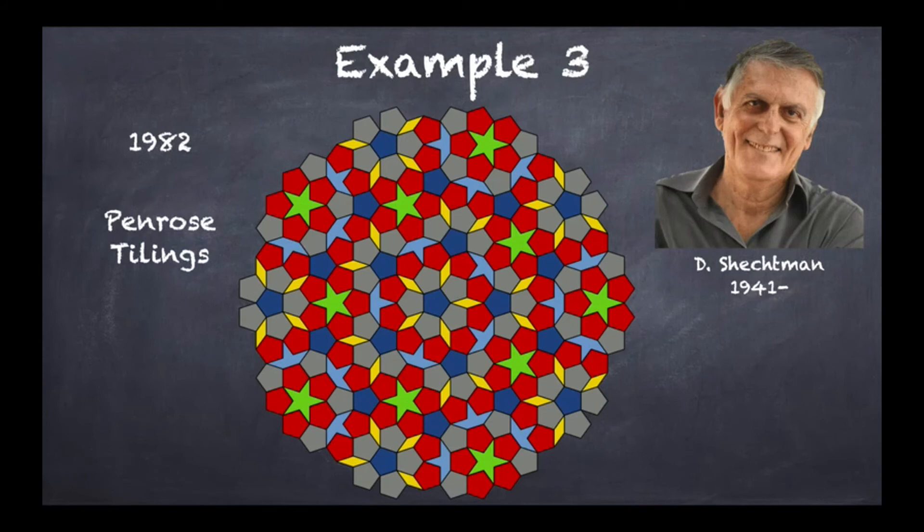Now Penrose tilings—I'm not going to enter into any details—are essentially filling of space which are not regular, or here it's more in the sense that there is no translation periodicity that can be found anywhere in the pattern, even if you were to continue it to infinity. Now it turns out that this particular figure, again that's what is reminiscent of it, so this is not the exact same thing that Shechtman actually found.